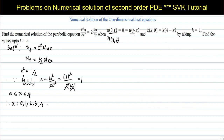Similarly, we find the values of t with step size k = 1. Since they have mentioned up to t = 5, we write t = 0, 1, 2, 3, 4, 5.